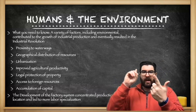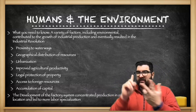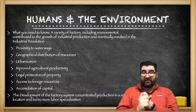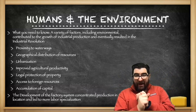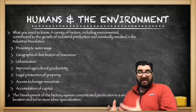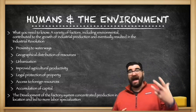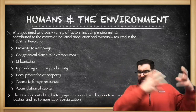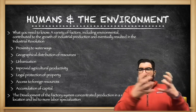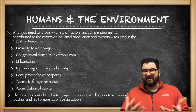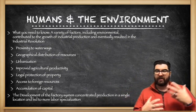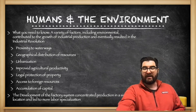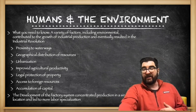We're going to talk about a number of these: proximity to waterways, the geographic distribution of resources, growing urbanization in Western Europe, improved agriculture, the legal protection of property rights, access to foreign resources, and the accumulation of capital. Then we take all of those things and develop what is known as the factory system of manufacturing, which will concentrate labor into a single location, leading to more labor specialization and increased production.